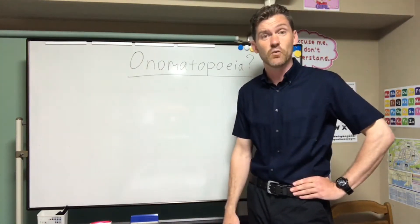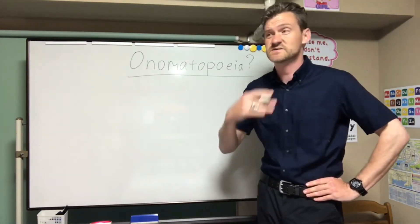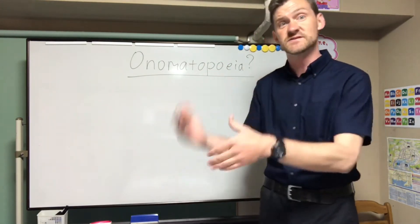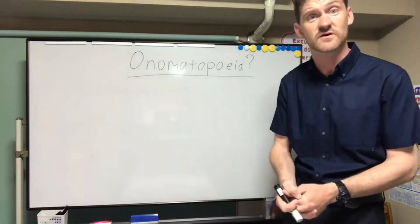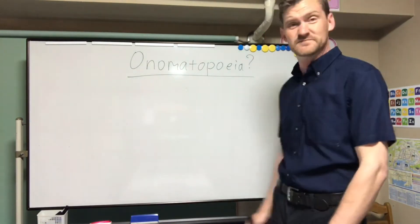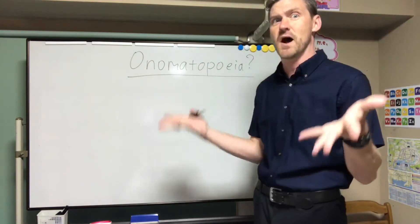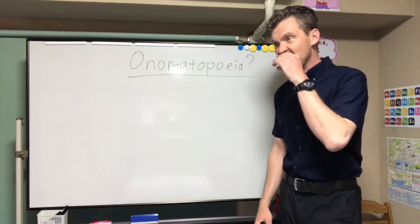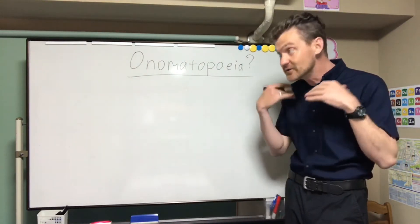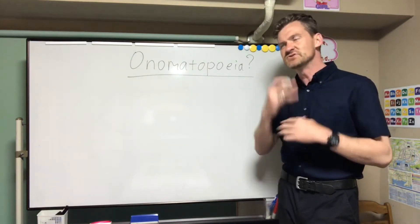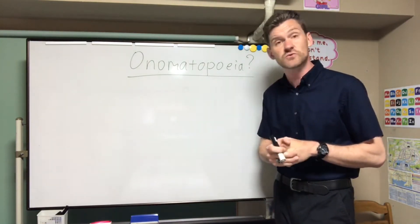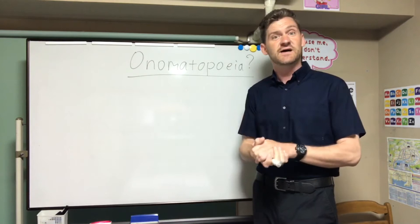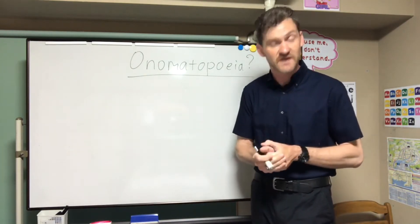What the heck is an onomatopoeia? So, giseigo, right? A word that sounds like it is, a word that sounds like the action, a word that sounds like what it describes. Giseigo, onomatopoeia. It's hard to say, right? Don't worry about it so much. But in Japanese, you use it a lot. You can use it a lot. In English, it generally translates more to a verb or a noun. We don't use onomatopoeias as much as Japanese people do in their native language.